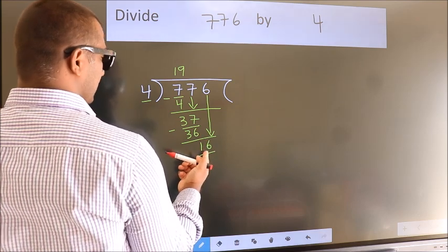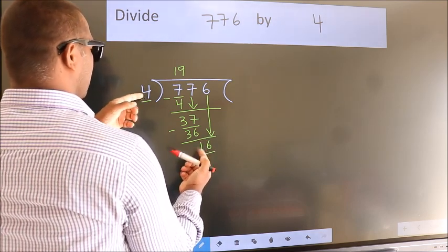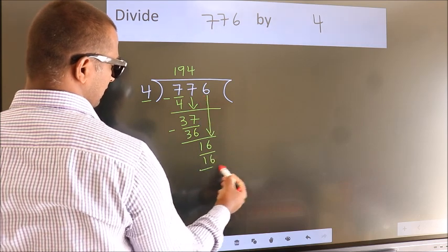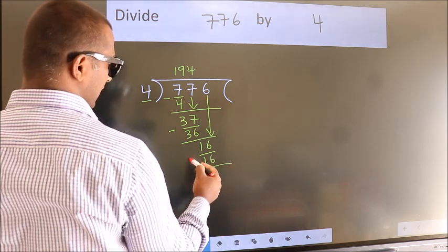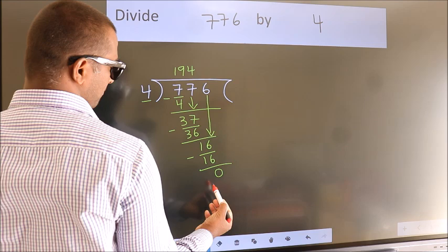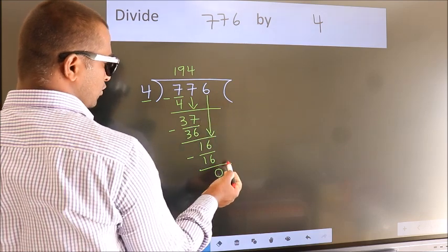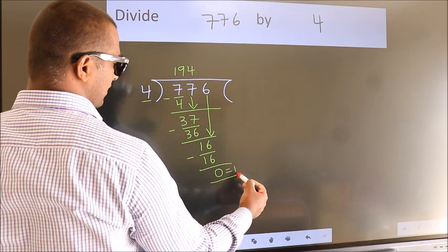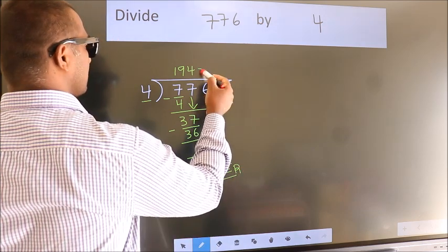When do we get 16 in the 4 table? 4 fours is 16. Now we subtract. We get 0. No more numbers to bring down, so we stop here. This is our remainder. This is our quotient.